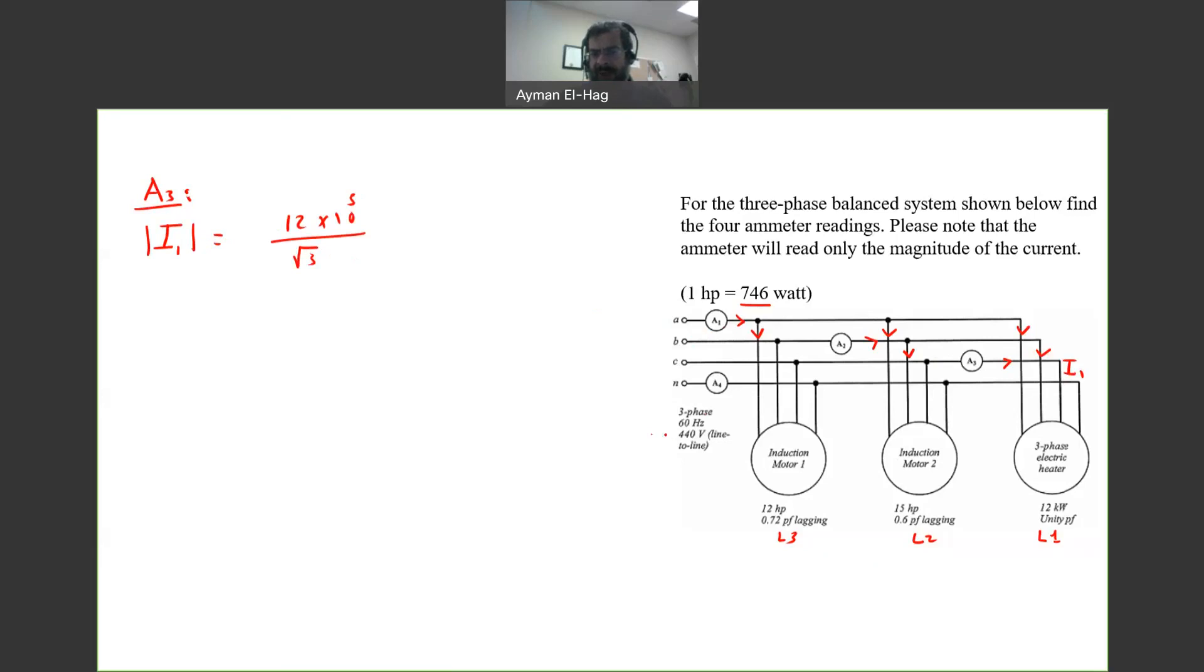With unity power factor, this will give me a current equal to 15.75 amps. So the reading of a3 will be 15.75 amp. Now let's go for a2.